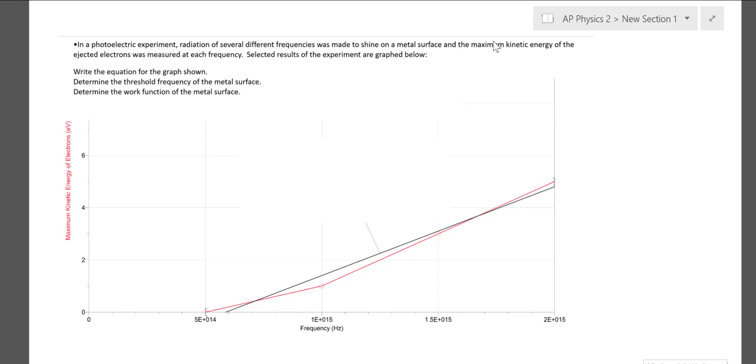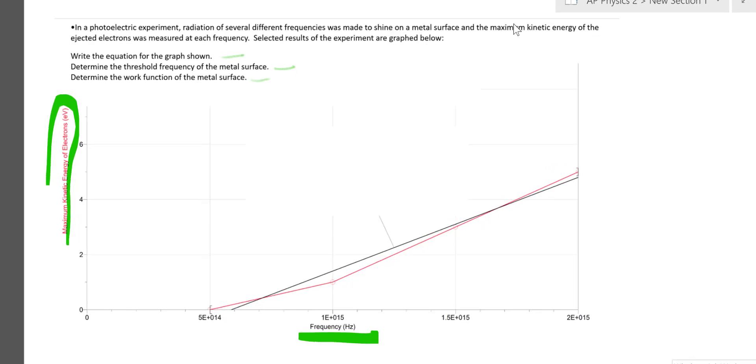So I've cheated a little bit. This is a computer-drawn graph, but I don't have the best fit line data on it. I'm going to calculate that myself. So we have the maximum kinetic energy of the electrons and the frequency graphed here. And we're going to try and find the threshold frequency of the metal surface, write the equation for the graph, and determine the work function for the metal surface.